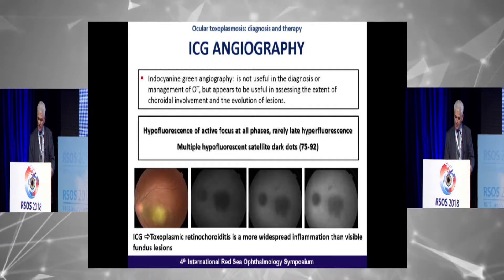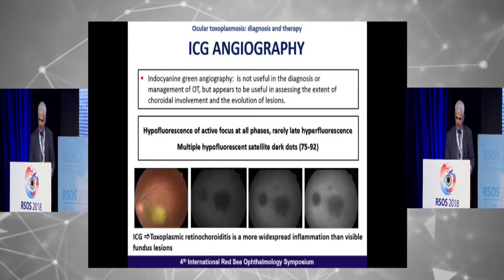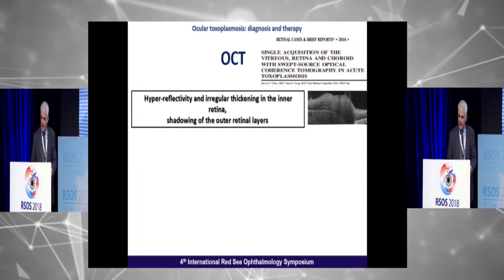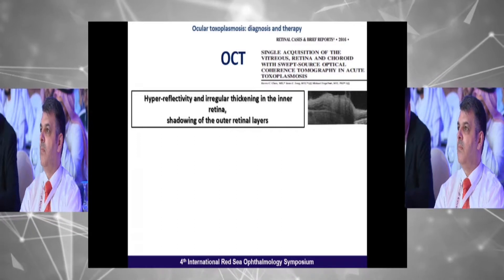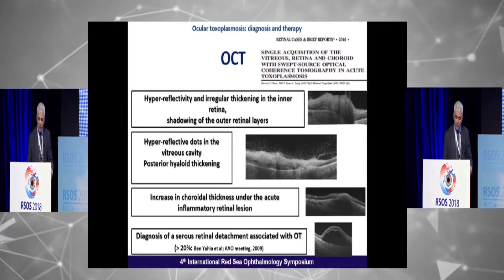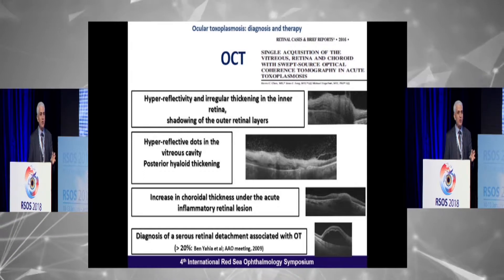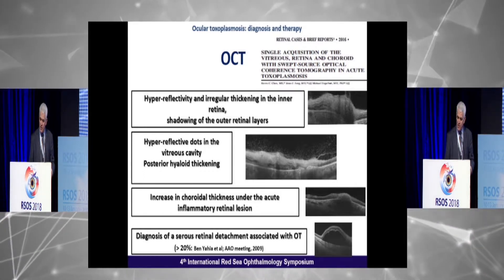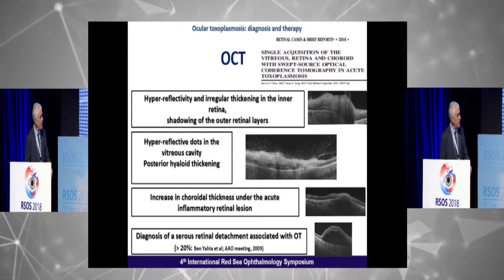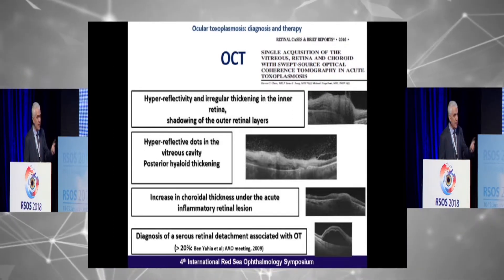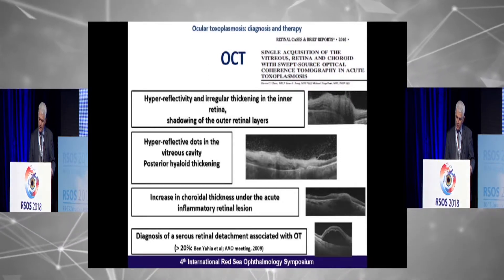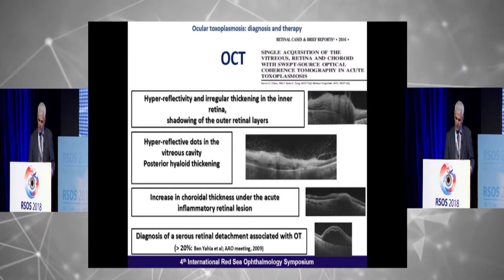Toxoplasmic retinochoroiditis represents a more widespread inflammation than visible fundus lesions suggest. OCT is a very important tool, showing hyperreflectivity and irregular thickening in the inner retina at the lesion site with shadowing of the outer retinal layers, hyperreflective dots in the vitreous cavity close to the retinal lesion, posterior hyaloid thickening, and increased choroidal thickness under acute inflammatory lesions — better seen by swept-source OCT — as well as serous retinal detachment frequently associated with ocular Toxoplasmosis.